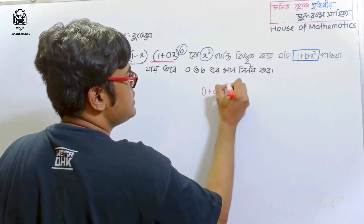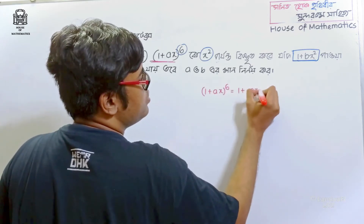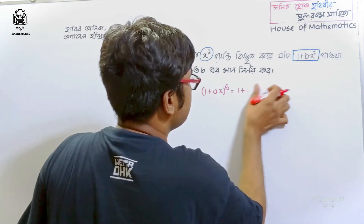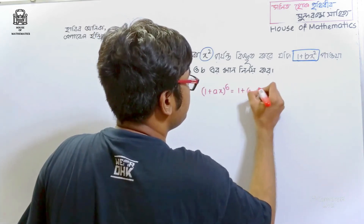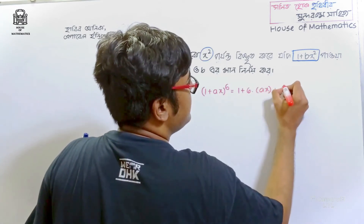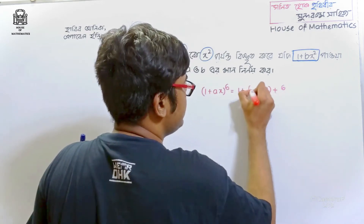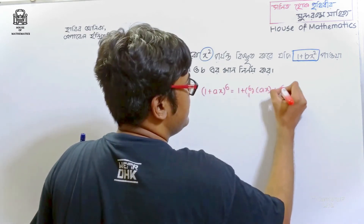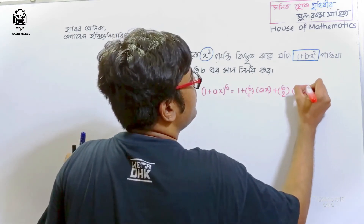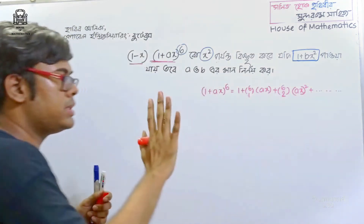We know that a plus x to the power 6 is equal to 1 plus x to the power 6, which gives us: 1 plus 6ax plus 6 into 5 over 1 into 2 into ax whole square plus dot dot dot. Done.